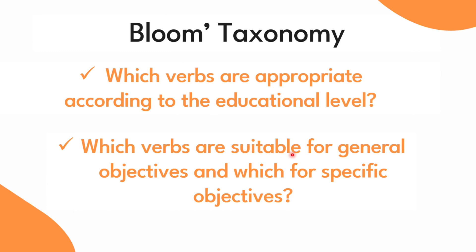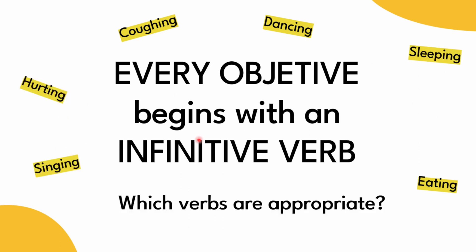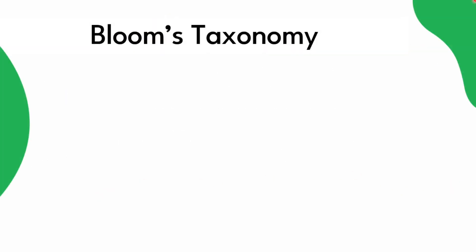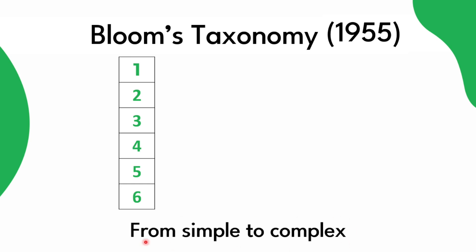It is also useful to know which verbs are adequate for general objectives and which are adequate for specific objectives. We know that every objective starts with an infinitive verb, such as coughing, dancing, eating, sleeping, singing, hurting, etc. But none of these verbs are actually suitable for use in an objective. So which verbs are suitable? Well, Bloom's taxonomy, built in 1955 by Bloom and other collaborators, tells us which verbs can be used in a classification from one to six, ordered from the simplest to the most complex.